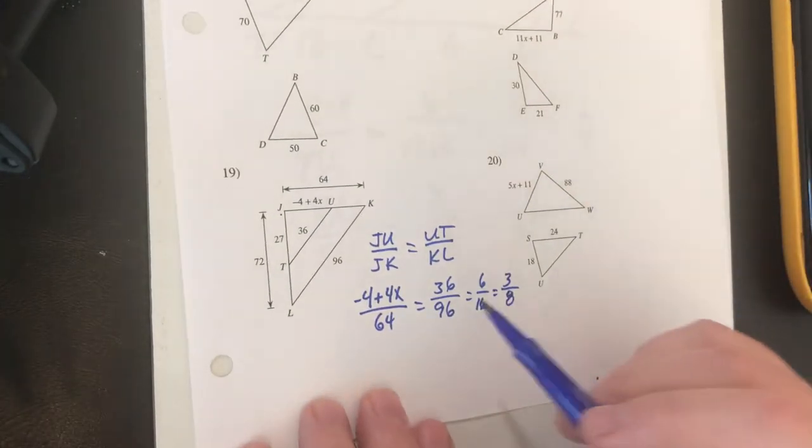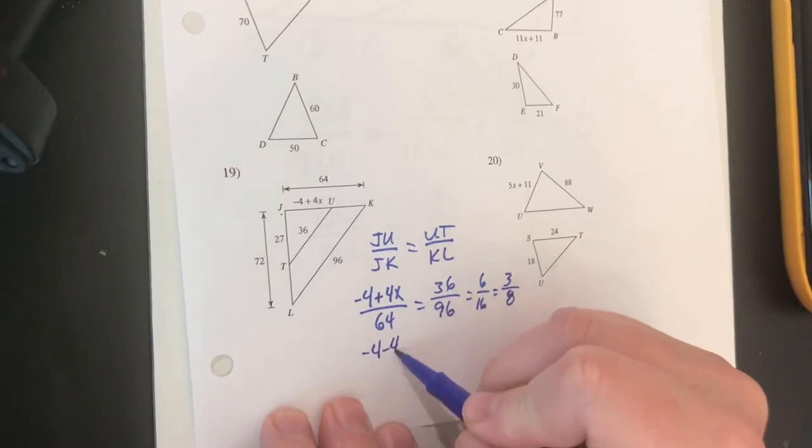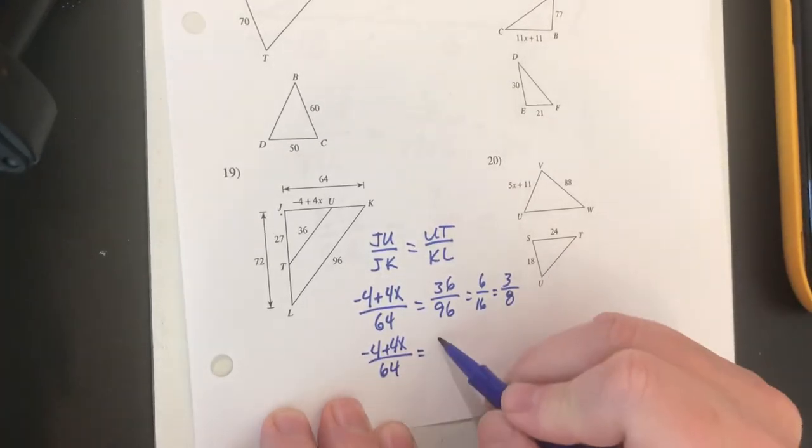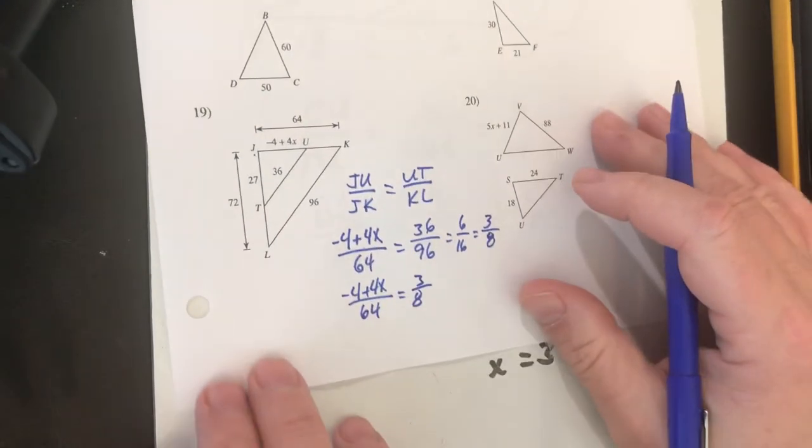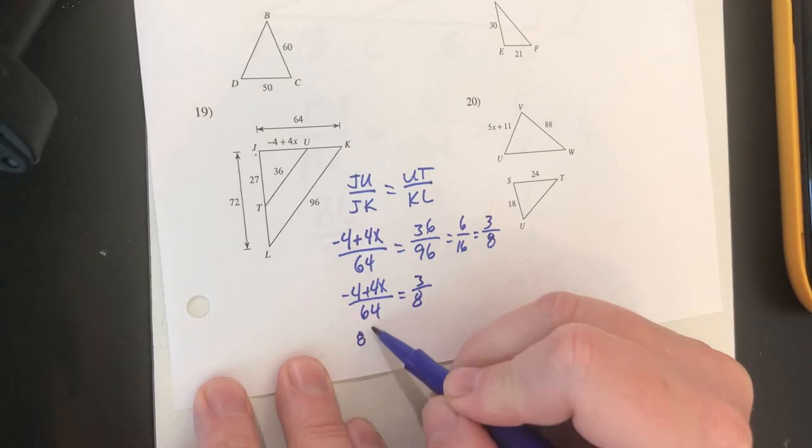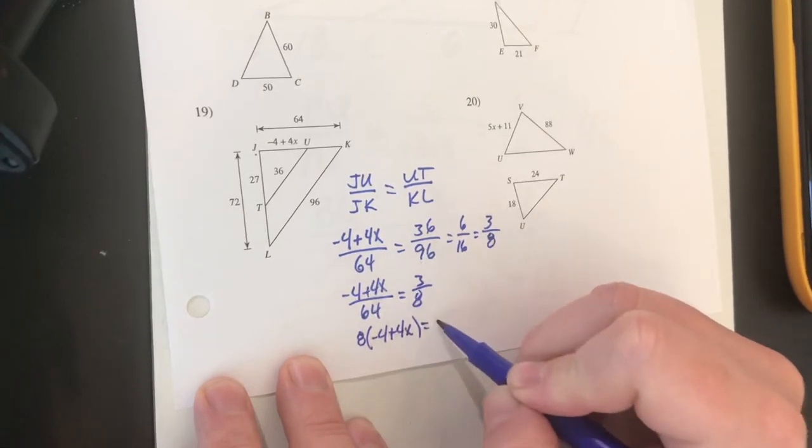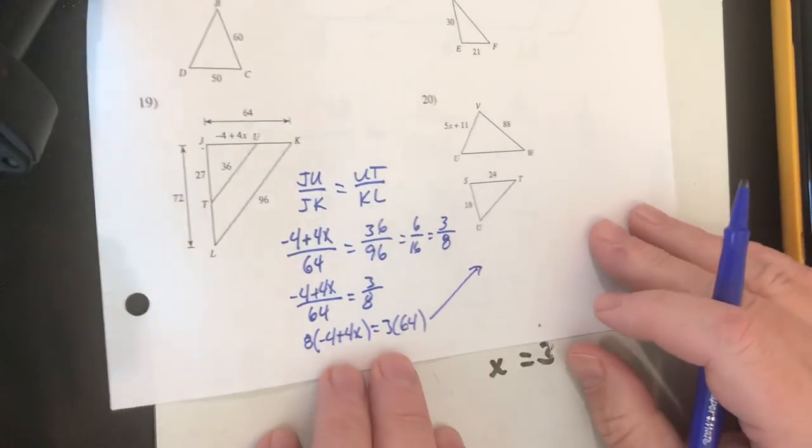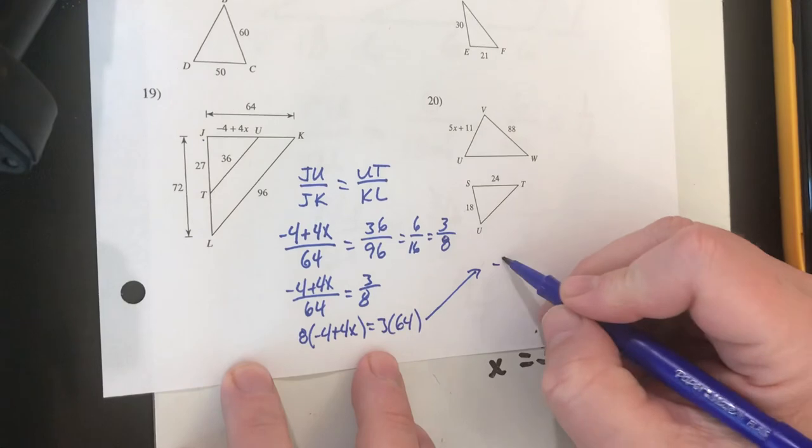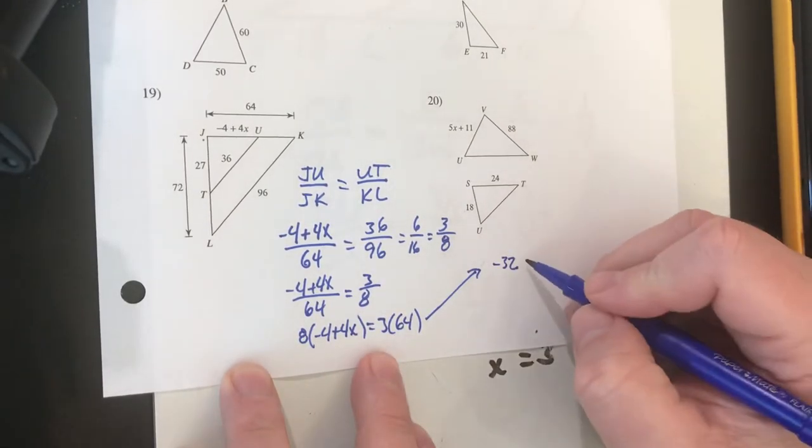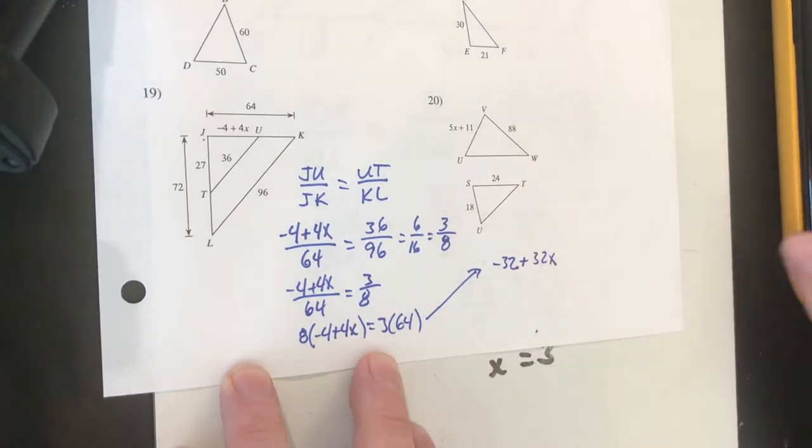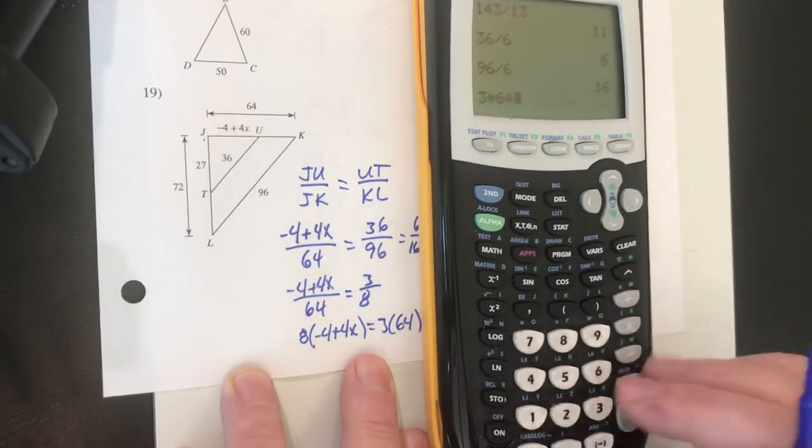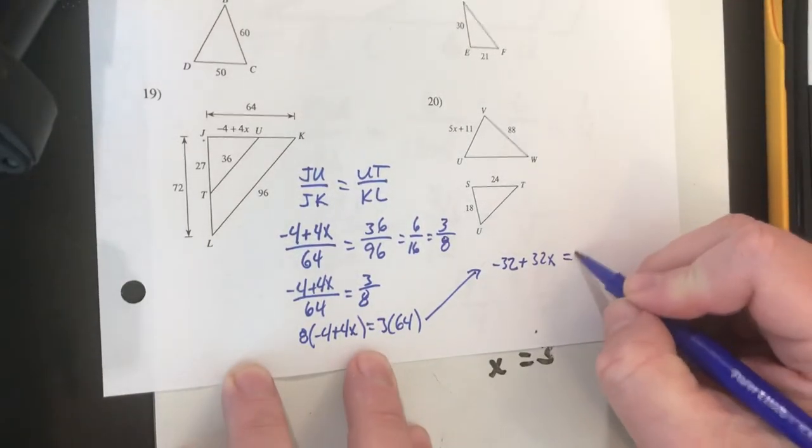Okay so now I can cross multiply. Let me rewrite this where it's a little bit easier to see what I'm doing. Negative 4 plus 4x over 64 is equal to 3 over 8. Now I can cross multiply here. I'll have 8 times negative 4 plus 4x equals 3 times 64. I need a little bit more space so I'm just going to keep going over here. 8 times negative 4 is negative 32, 8 times positive 4x is plus 32x and then 3 times 64, well I'm not sure what that is so let me bring the calculator here. 3 times 64 is 192.